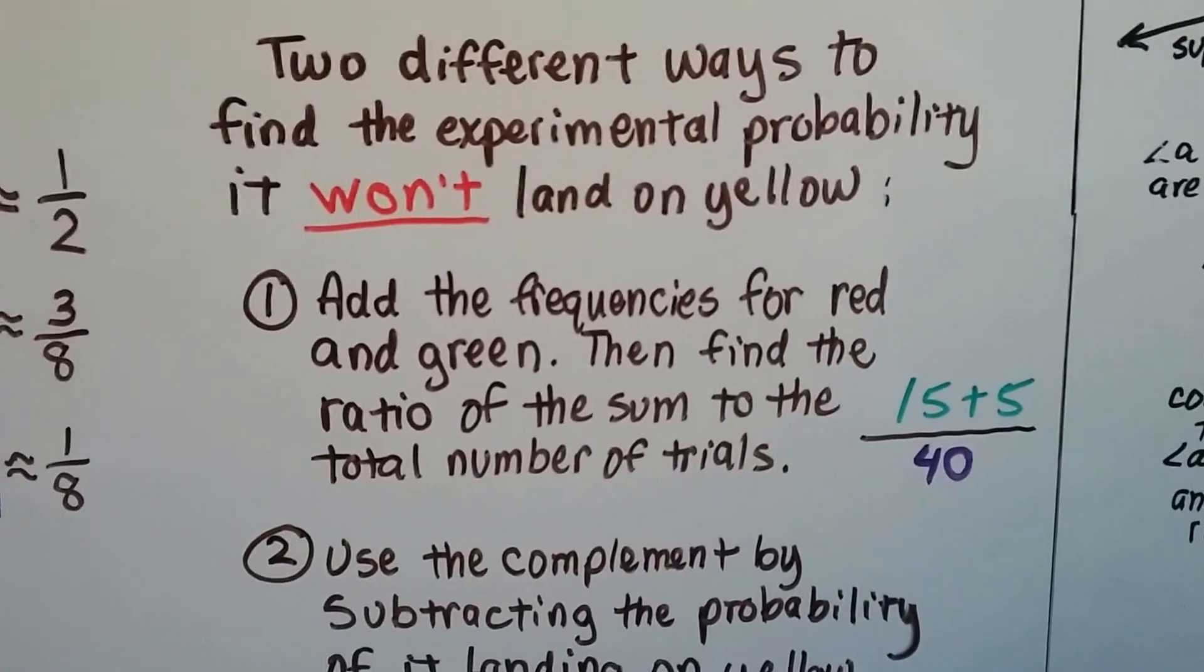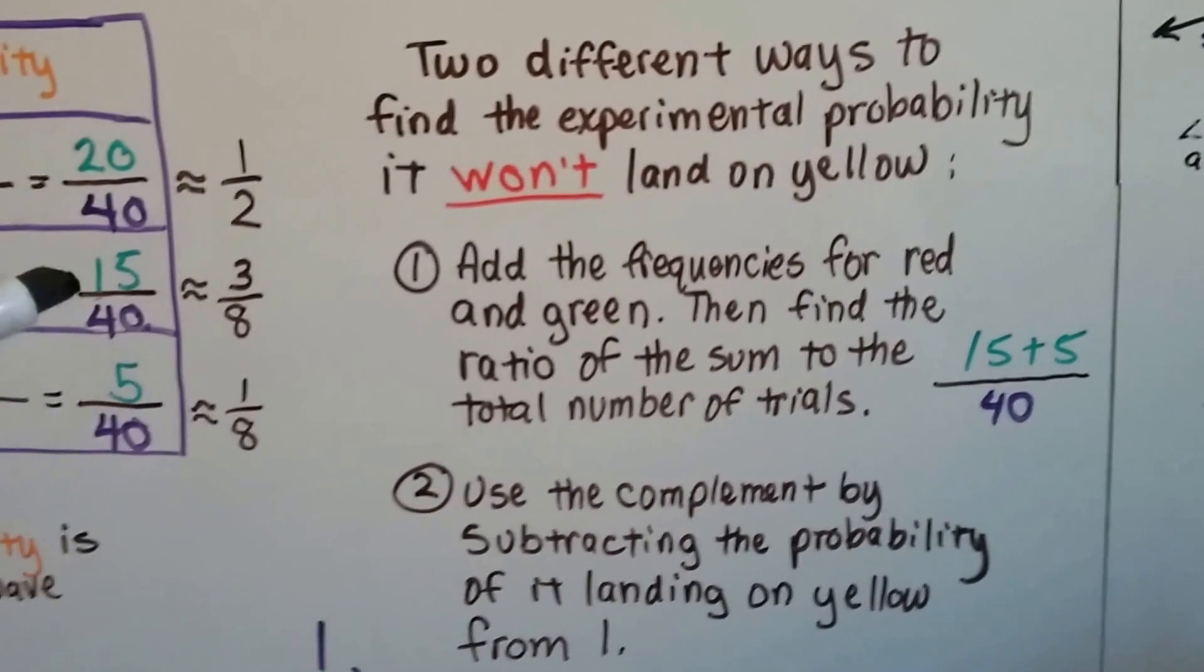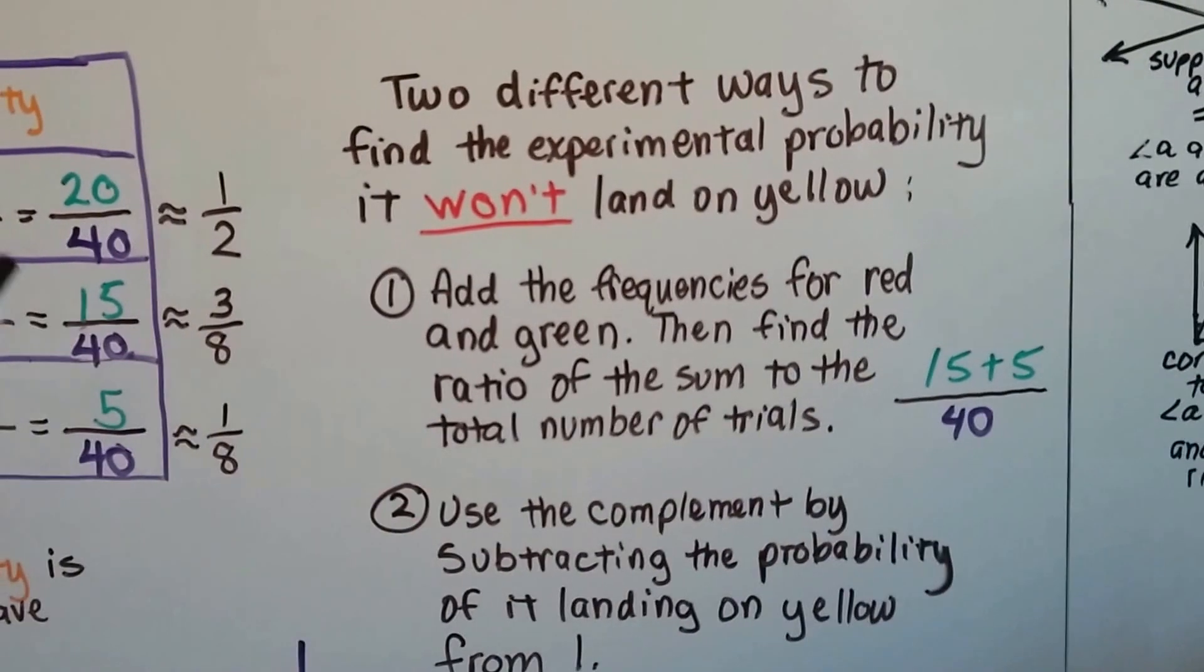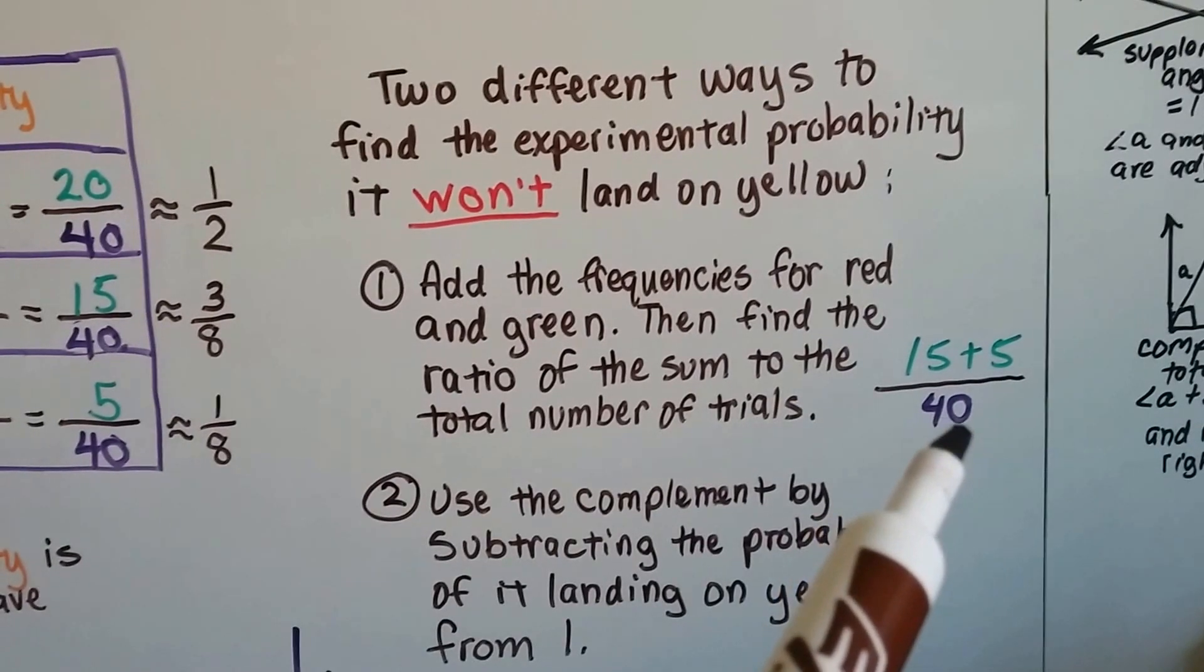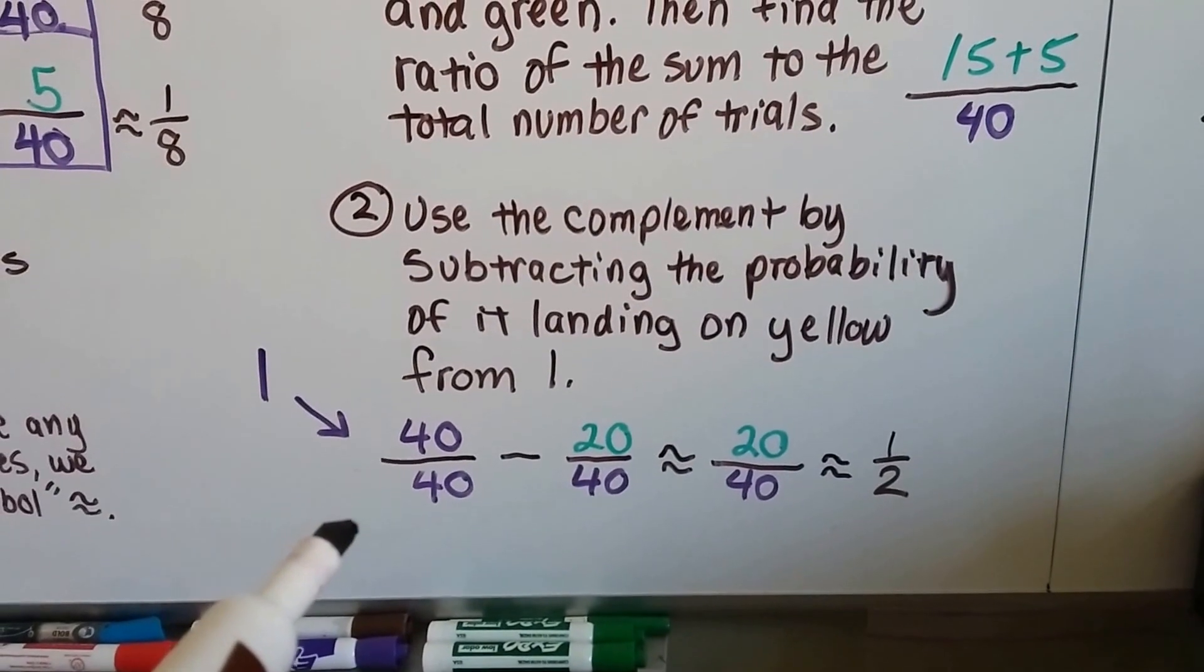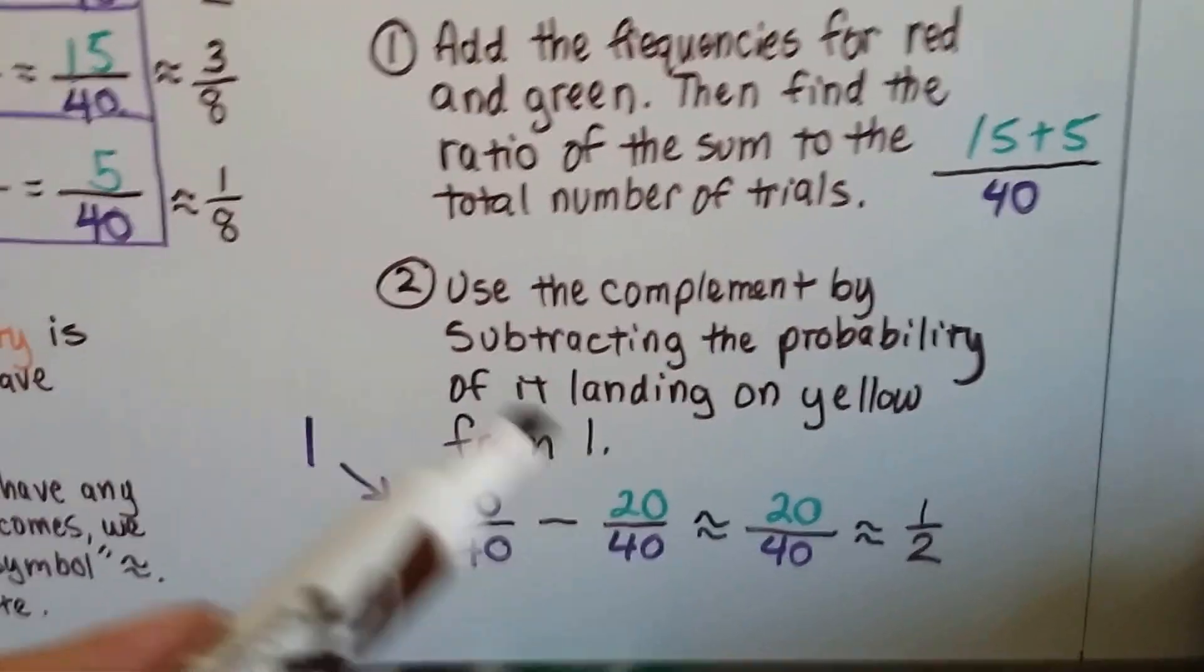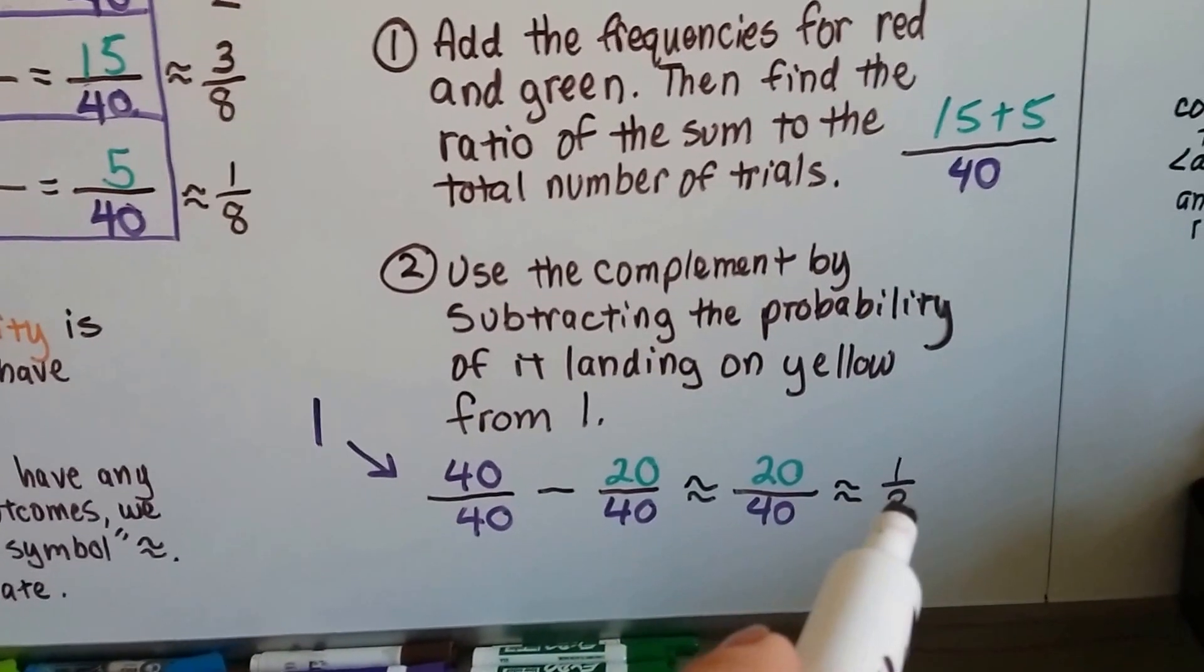So two different ways to find the experimental probability it won't land on yellow would have been to add the frequencies for the red and green ones, then find the ratio of the sum of the total of the trials. So 15 plus 5, the 15 plus the 5, over the 40, would have been 20 over 40. Then we would have known how much it won't land on yellow.